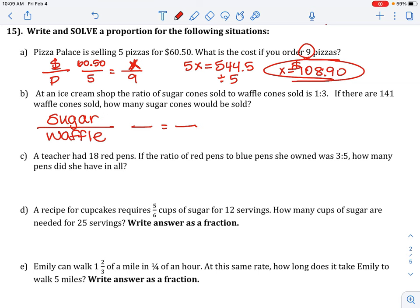So the ratio of sugar to waffle. If 1 is the sugar, the 3 is the waffle. 1 is the sugar, 3 is the waffle. If there are 141 waffle cones, so 141 waffle cones, how many sugar cones would be sold? At this point, cross-multiply and solve. You get x equals 47 sugar cones.